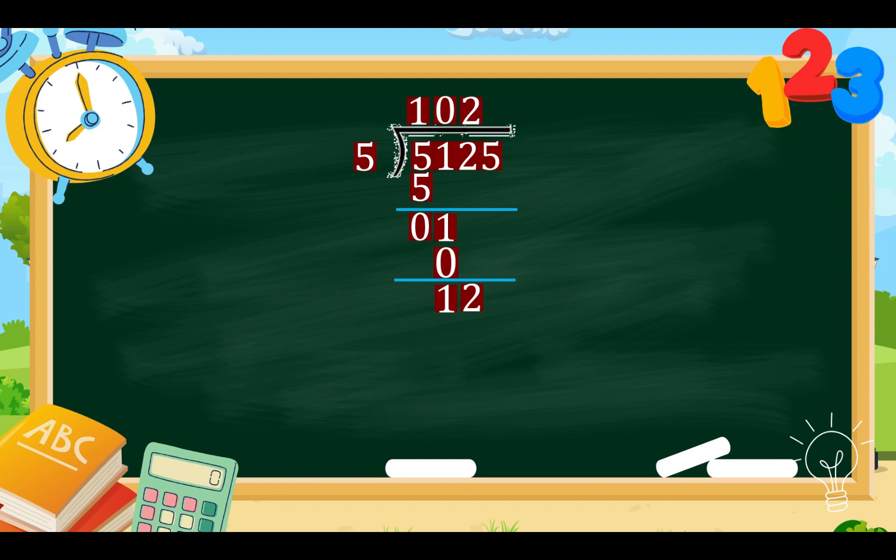12 divided by 5 equals 2. 2 times 5 equals 10. Then, subtract 12 minus 10. We have 2. And then, bring down the last number which is 5. So, you have 25 divided by 5 equals 5. Then, multiply 5 times 5 equals 25. And, subtract 25 minus 25 equals 0. So, we don't have to bring down another number because there are no numbers left at the dividend. So, our final answer or quotient is 1,025. Therefore, 5,125 divided by 5 equals 1,025.